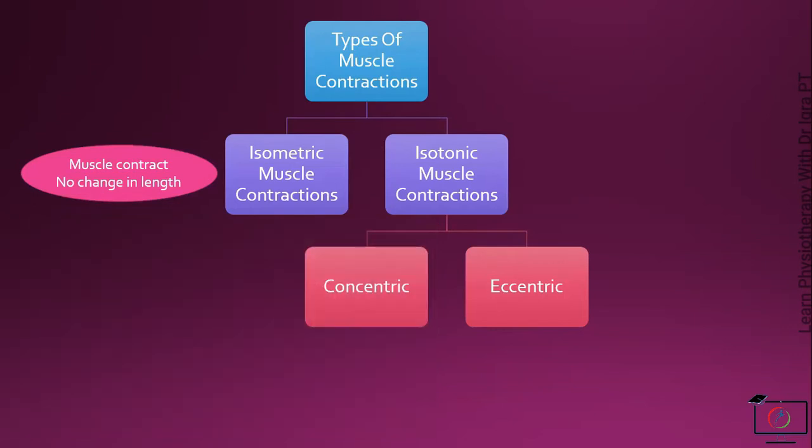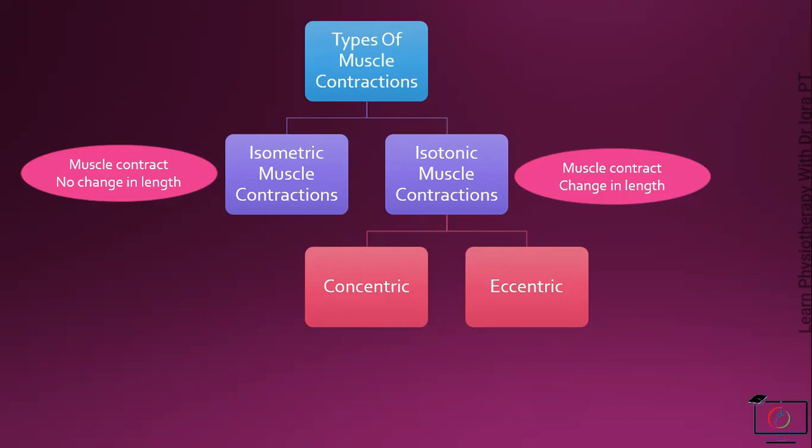While in isotonic muscle contraction, the muscle contracts and there will be a change in the length. The muscle length either decreases or increases. On the basis of the change in the length, the isotonic muscle contractions are further subdivided.